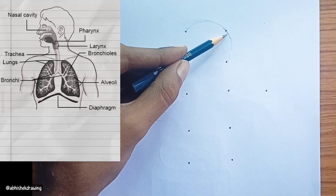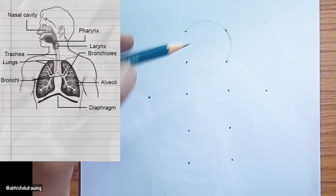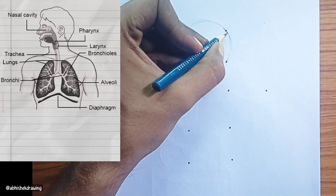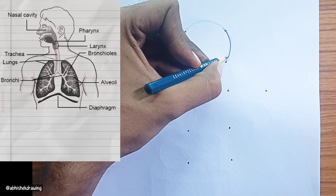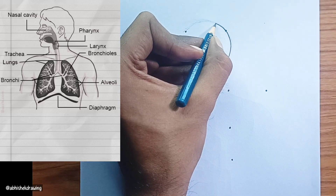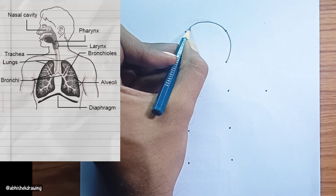Nasal cavity. This is the primary entry point for air into the respiratory system. It warms, moistens, and filters the inhaled air before it proceeds further.